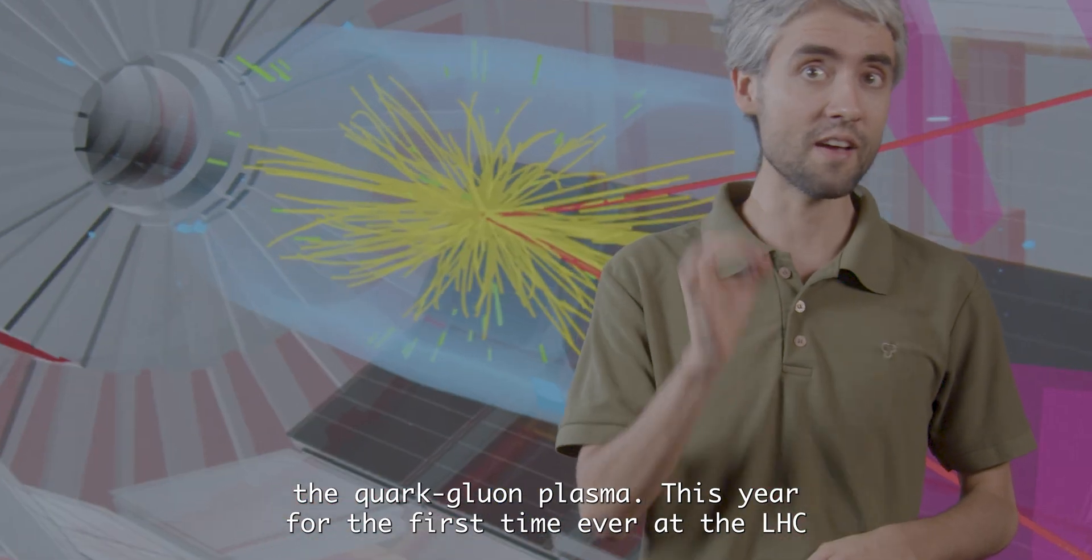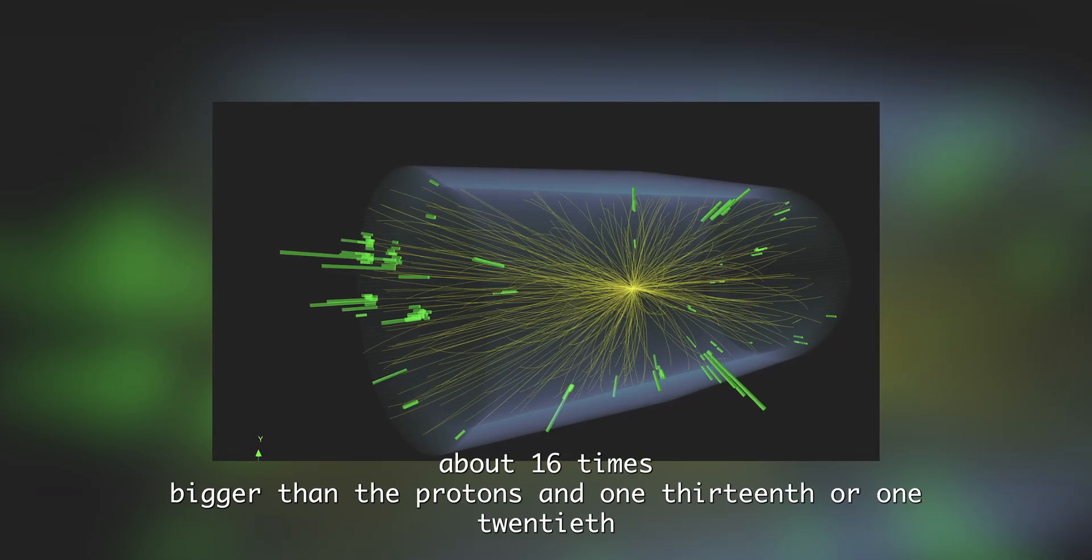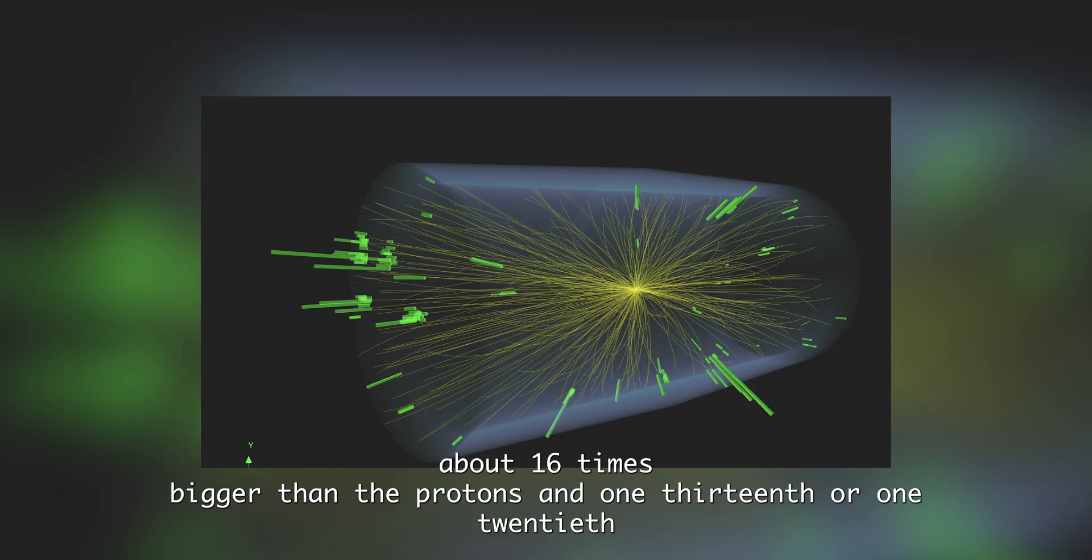This year, for the first time ever at the LHC, we went even smaller with oxygen and neon, about 16 times bigger than the protons and 1/13th or 1/20th the size of the lead.